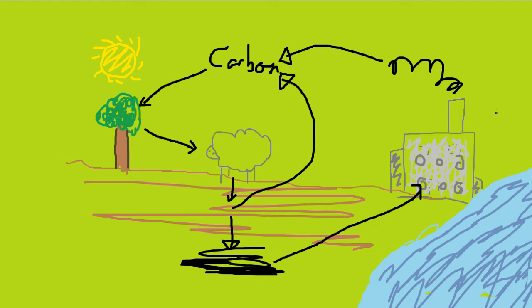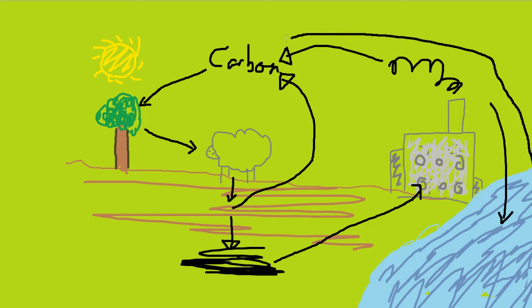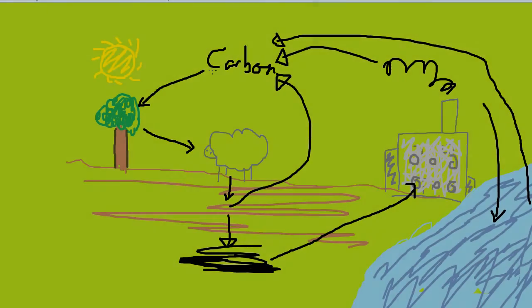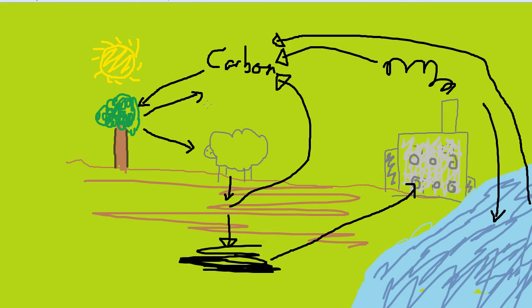The sea also absorbs a lot of carbon in the colder months, and in the summer when it gets warmer, this carbon dioxide is released, giving it back to the atmosphere. Additionally, plants and animals both respire, so they both give out CO2 back into the atmosphere. So that's another way that we get carbon dioxide in the atmosphere.